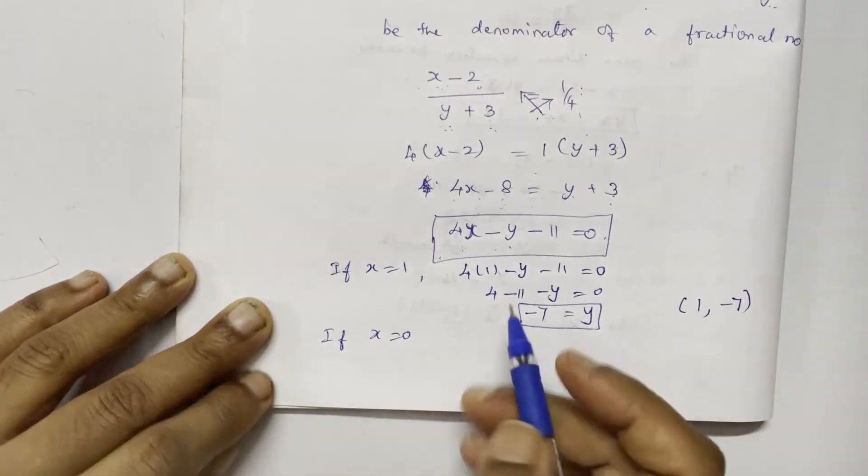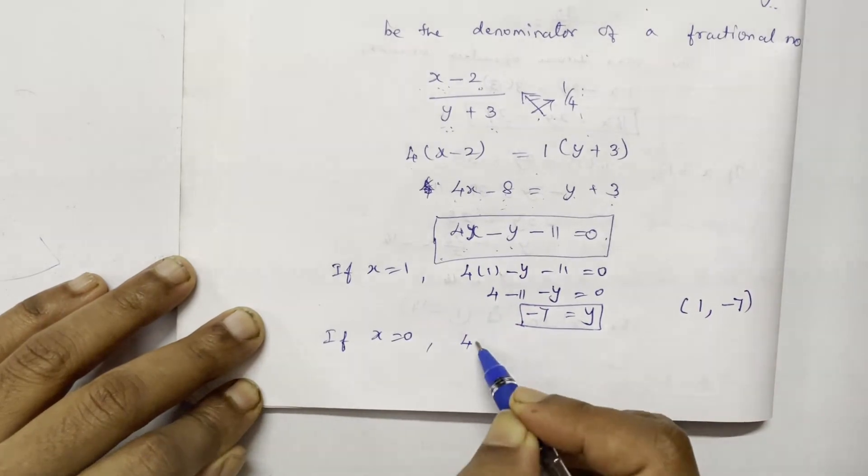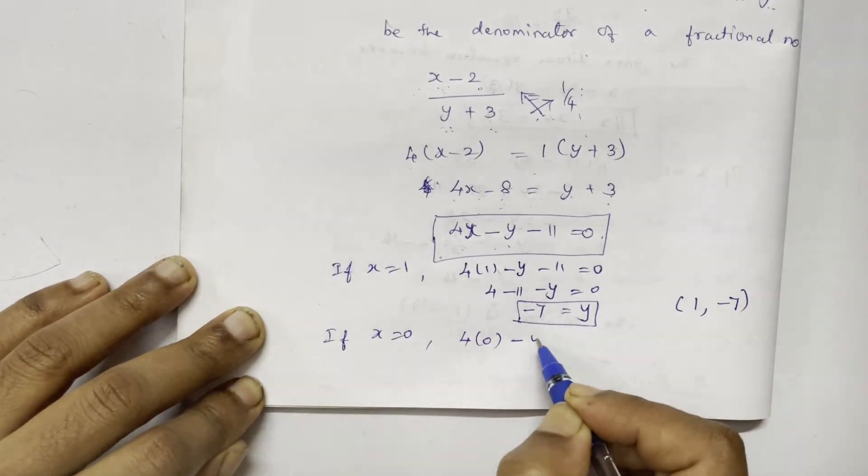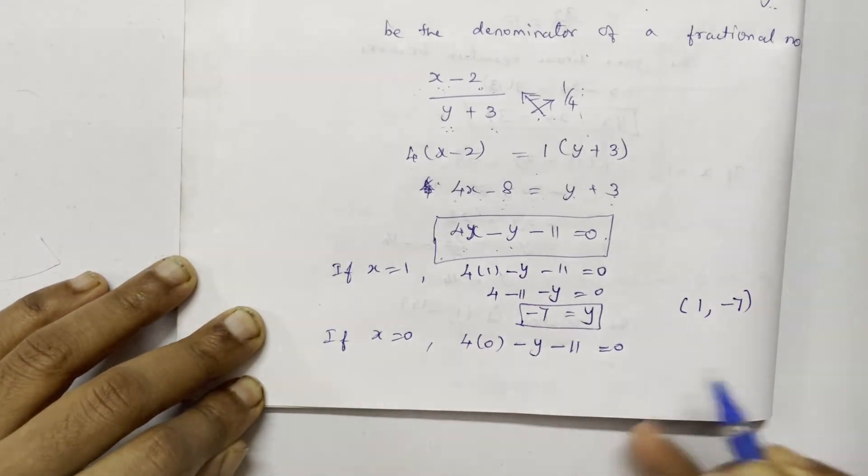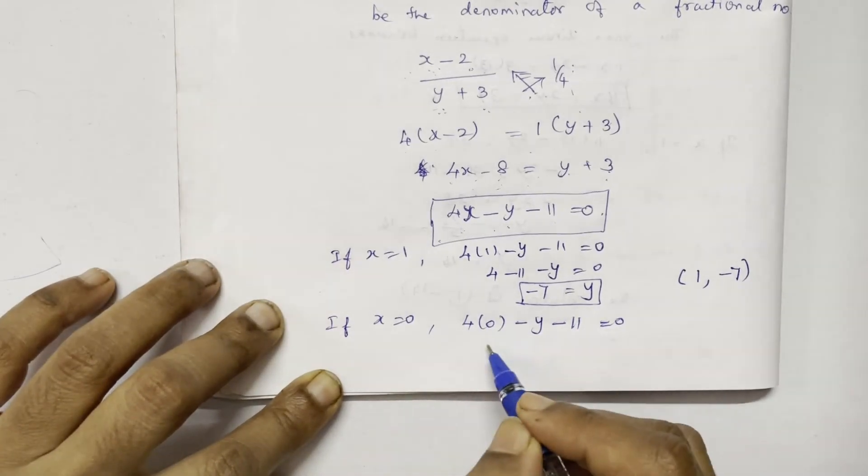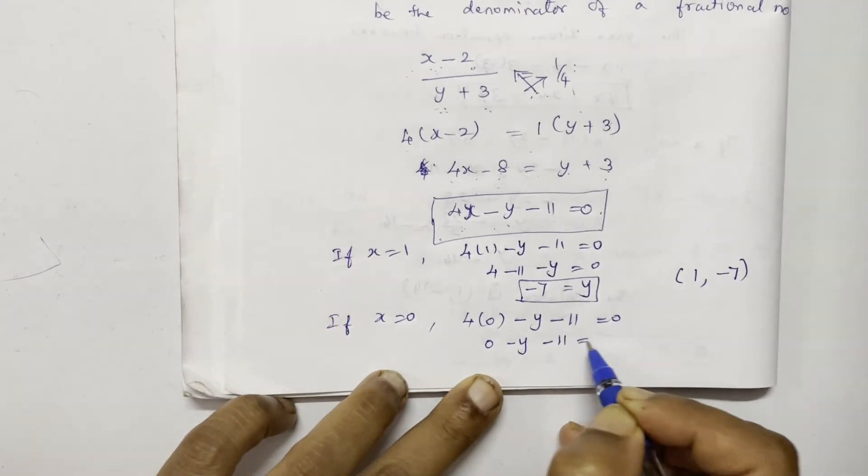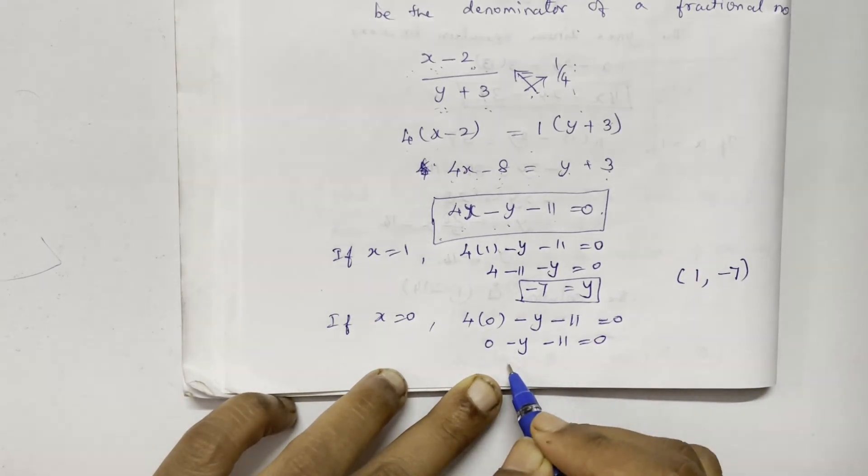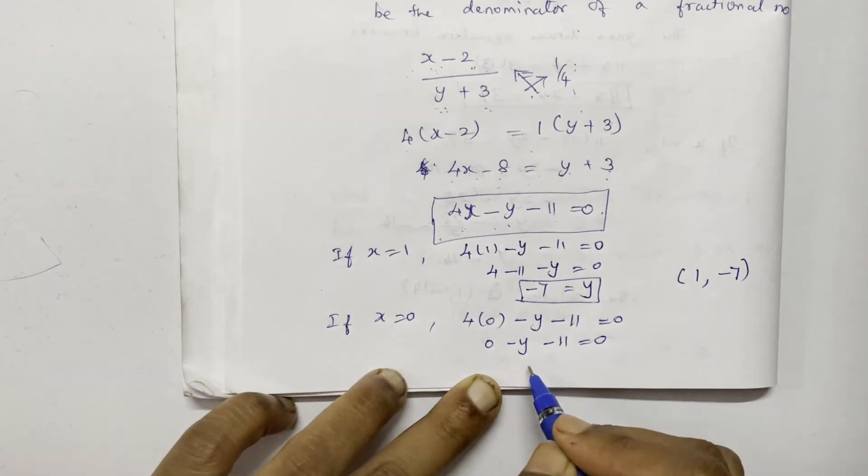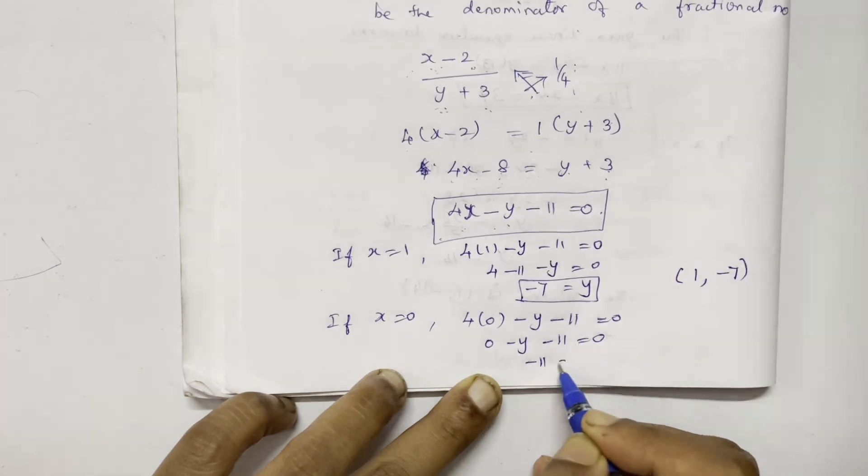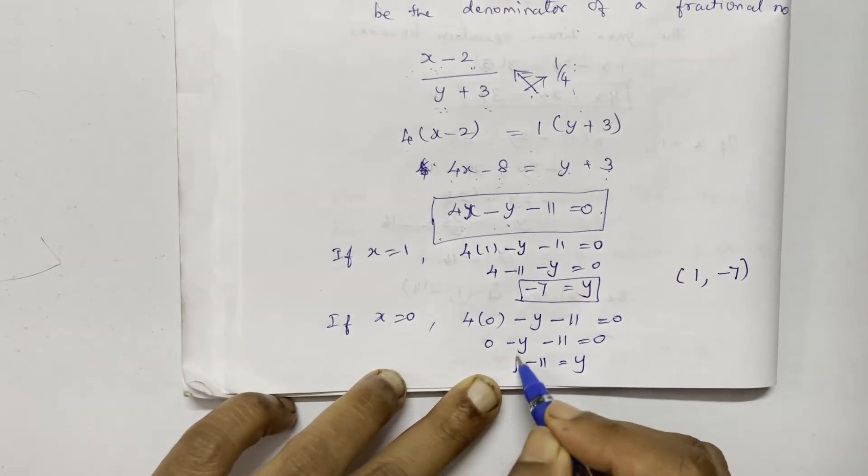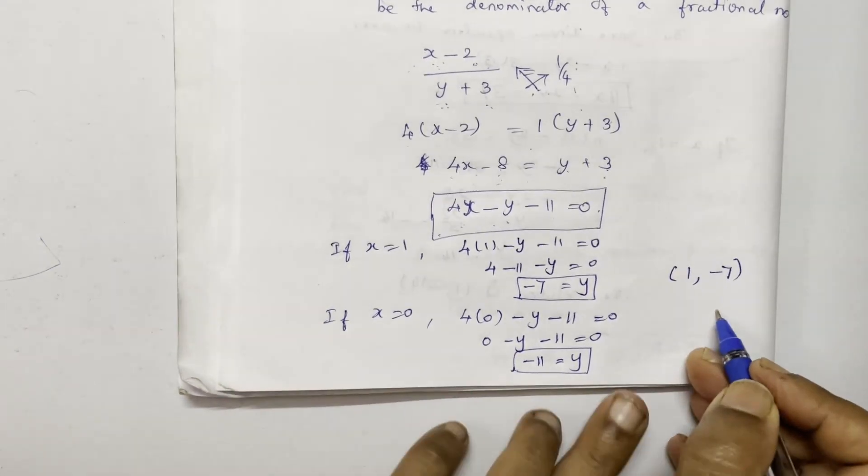Any number we have to do. So 4 of 0 minus y minus 11 equal to 0. In the term 0, 0 minus y minus 11 equal to 0. Now y negative are there. So minus 11 equal to y. This is one more solution.